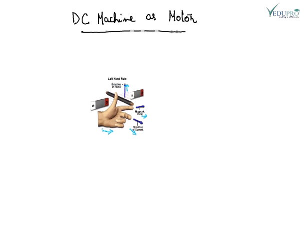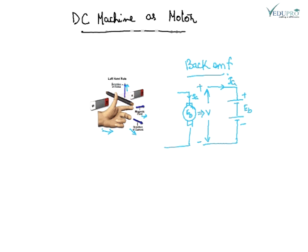Now we will try to understand the concept of back EMF. If the conductors of the armature between the poles of the magnet are rotating, the DC motor cuts the magnetic flux, thereby developing an induced EMF which opposes the applied voltage as per Lenz's law. The induced EMF set up in the coil of the DC motor opposing the current flowing through the conductor when the armature rotates is called back EMF.